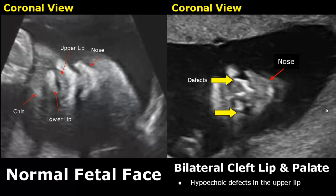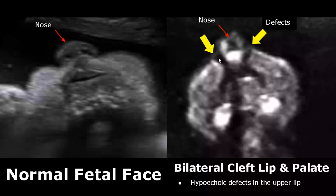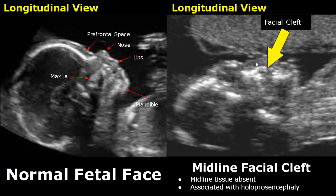In this image, we can see the bilateral clefts more clearly. The hypoechoic defects are communicating with the palate. Midline facial cleft is associated with holoprosencephaly. The face is deformed and there is absence of normal midline tissue.